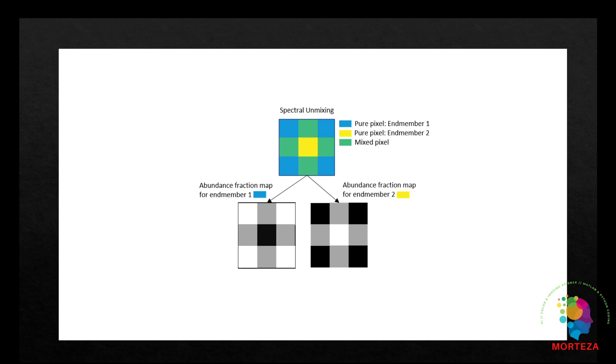The spectra of the endmembers are prominent features in the hyperspectral data and can be used for efficient spectral unmixing, segmentation, and classification of hyperspectral images.